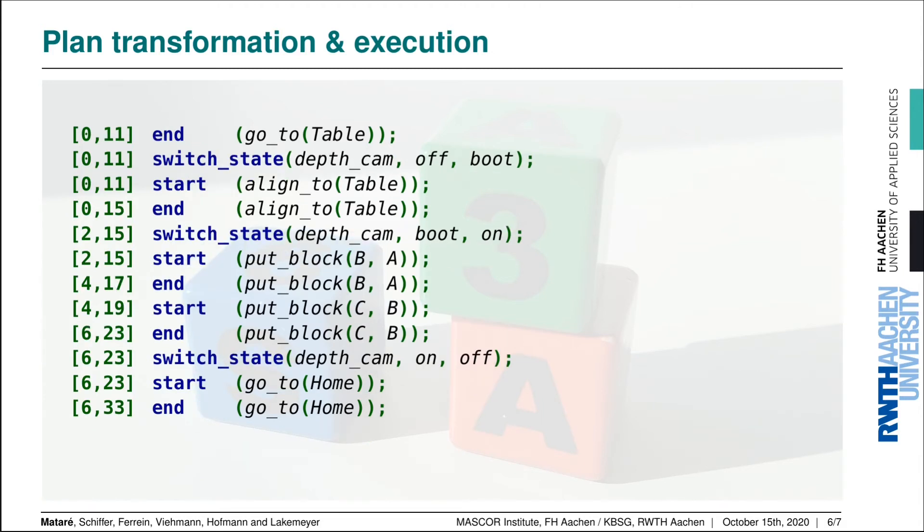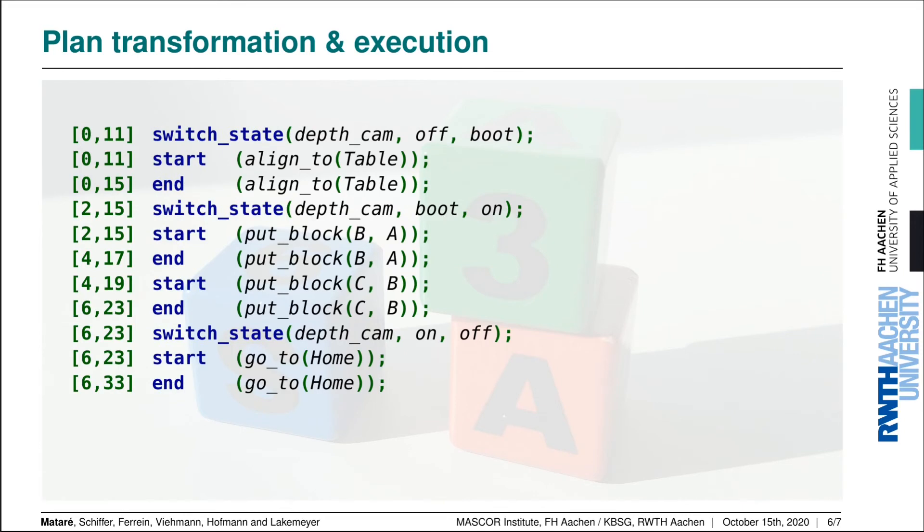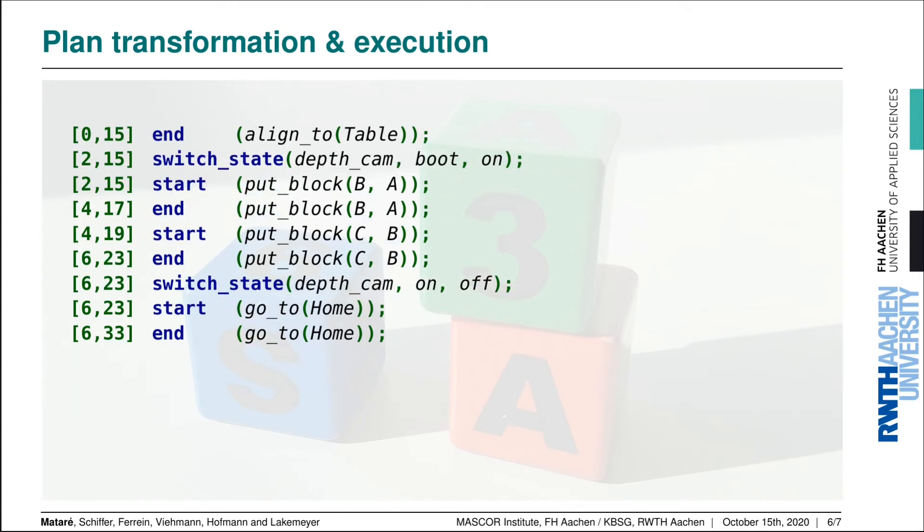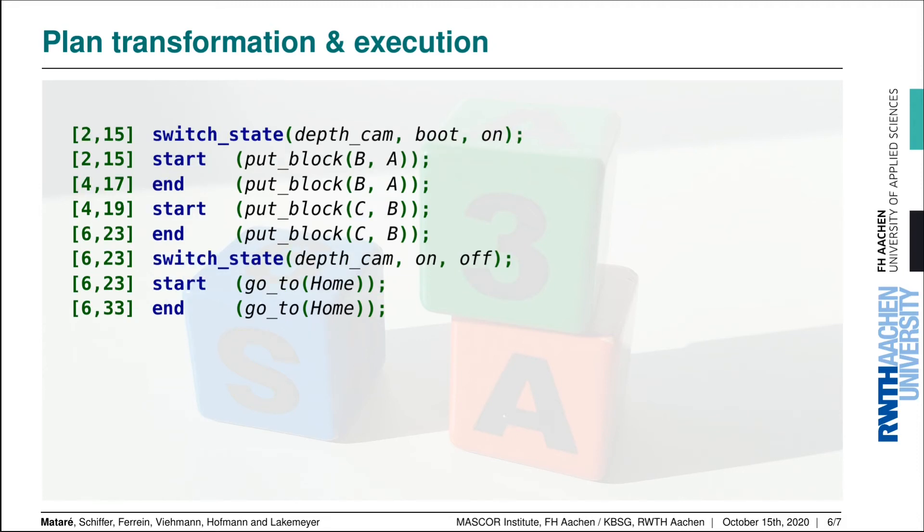Now when we execute this plan, we just execute it from the top. One important thing about these end actions is we cannot actually control when they happen. We have to wait for feedback from the platform backend that the movement is actually finished. We call that an exogenous action. So once that happens, we are done with moving and we can execute the maintenance action, then start aligning to the table.